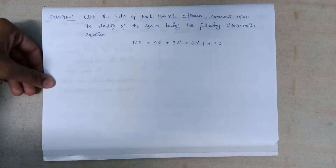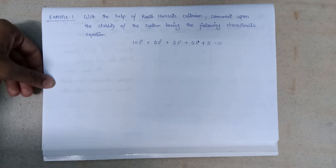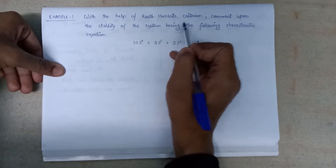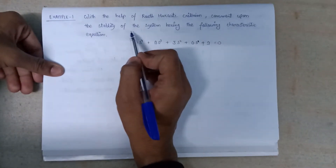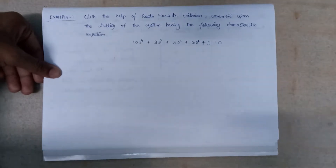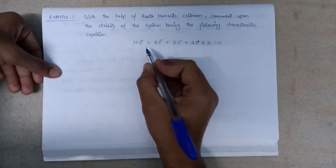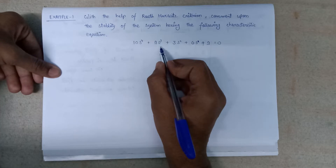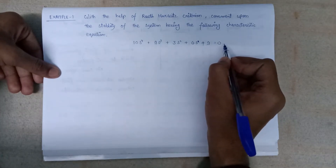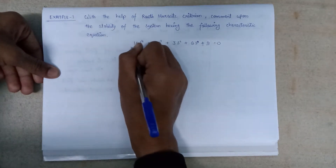Welcome. This is lecture number 7 of this tutorial series. In this lecture we are going to deal with example number 1. This example says: with the help of Routh-Hurwitz criteria, comment upon the stability of the system having the following characteristic equation: 10s⁴ + 9s³ + 3s² + 6s + 9 = 0.